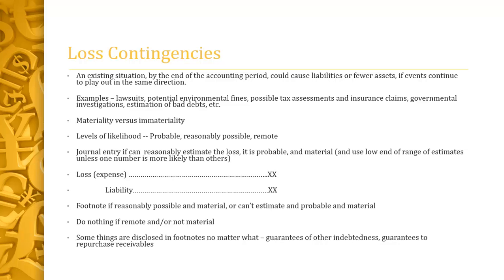The question then is what do we do about probable and reasonably possible? The journal entry is done when everything is true: it's probable, material, and we can estimate it. We use the low end of the range of estimates unless there's one number that stands out as most likely. We footnote if something is probable but we can't estimate it and it's material, or if it's reasonably possible and a material amount. The do-nothings fall with remote and not material.